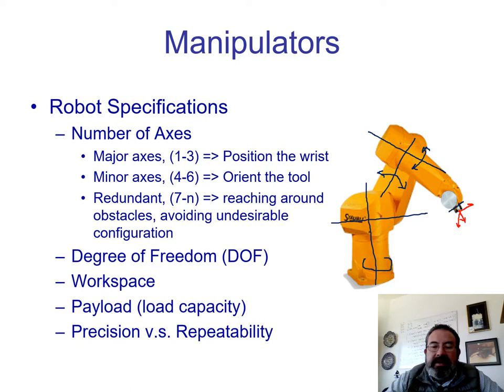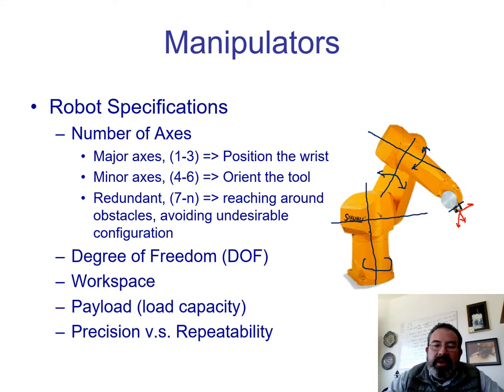Another very important idea is the workspace. The workspace is formed with all the points that the end effector can reach. For a Cartesian robot, the workspace is something like a hollow cube, because there are some positions inside this cube that are not able to be reached by the end effector. The payload is the load capacity — how much weight can the robot lift, for example.